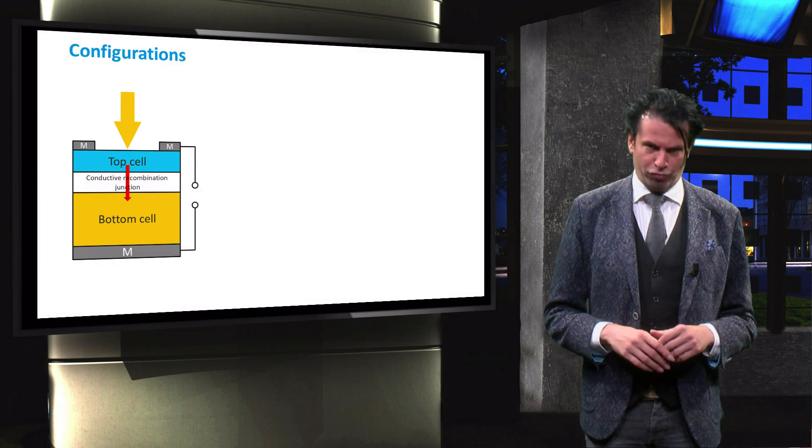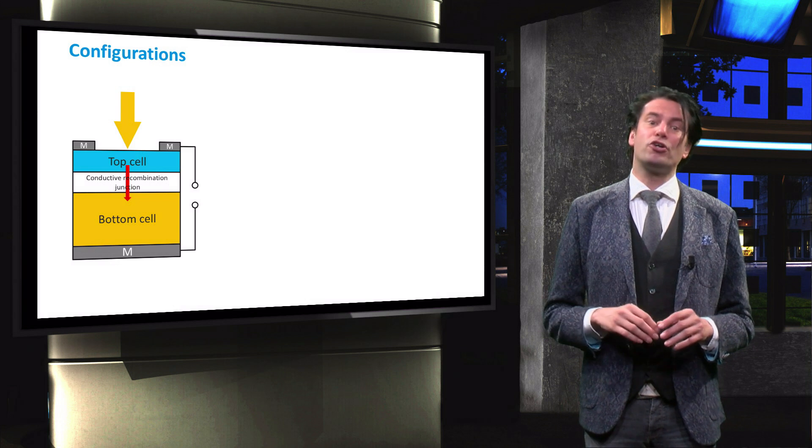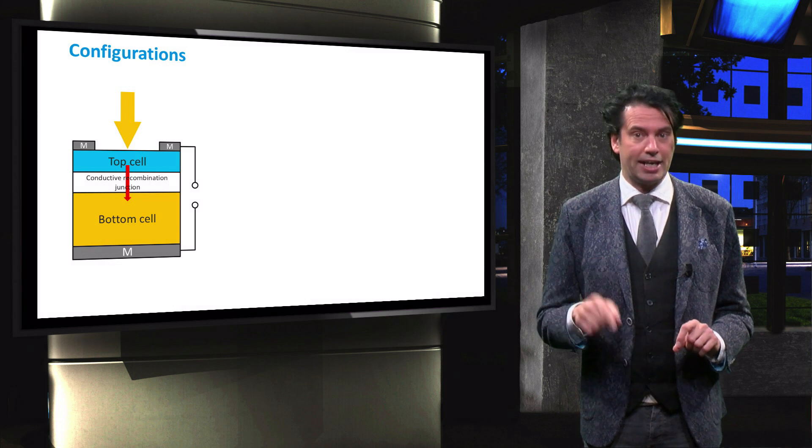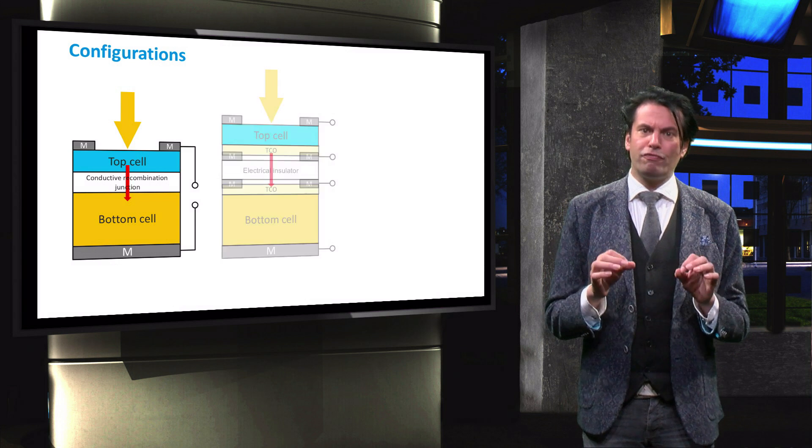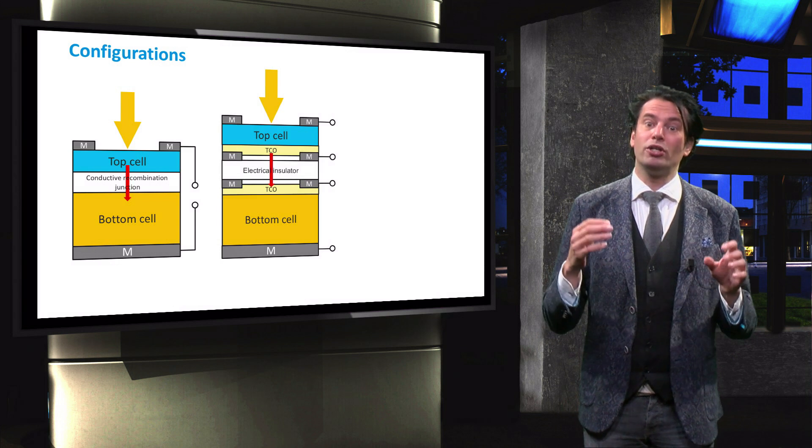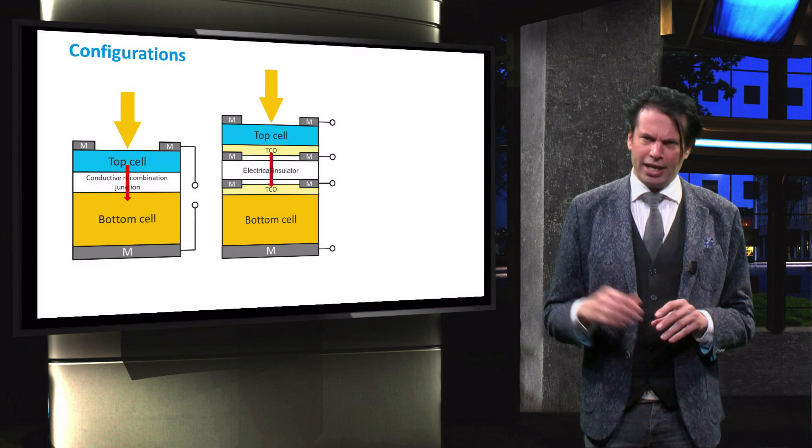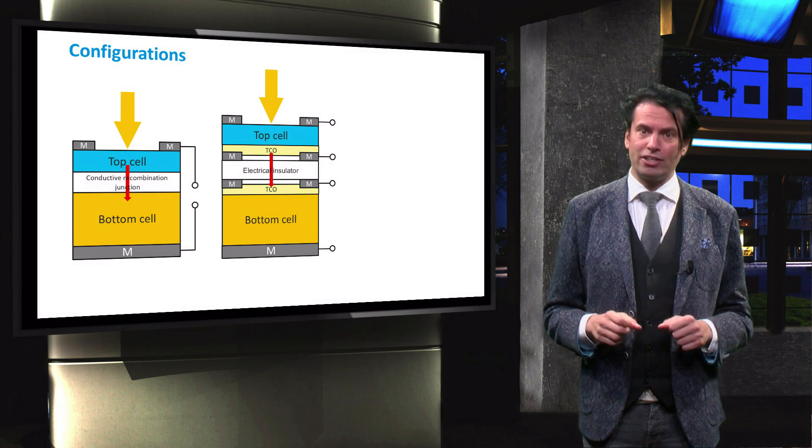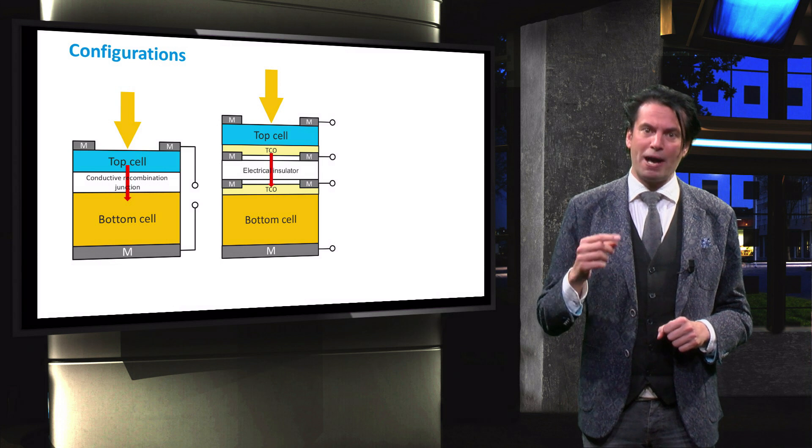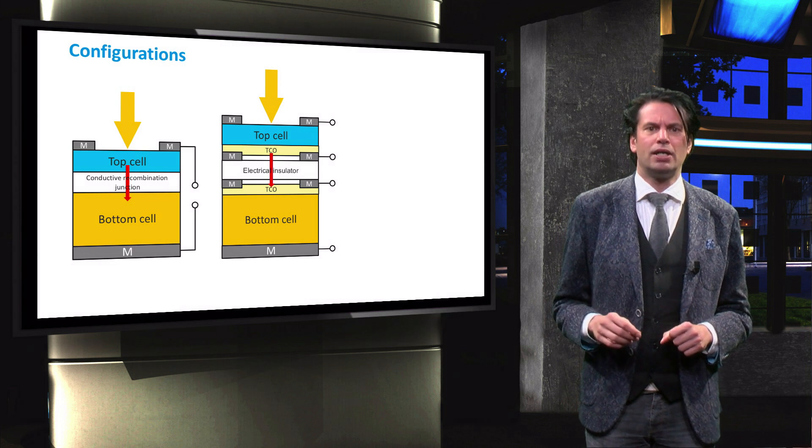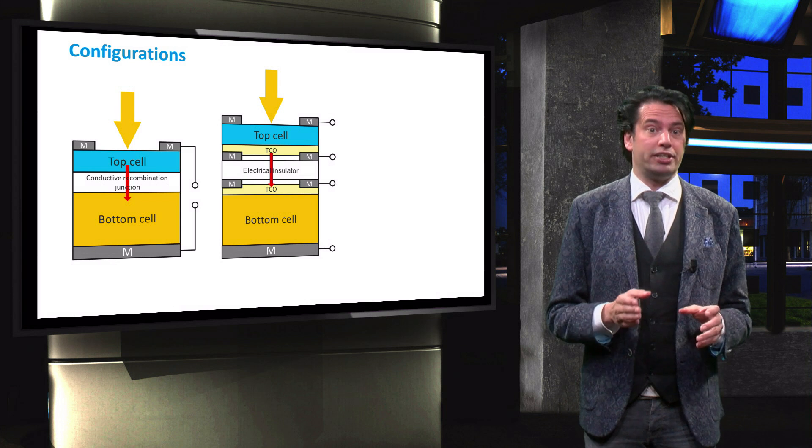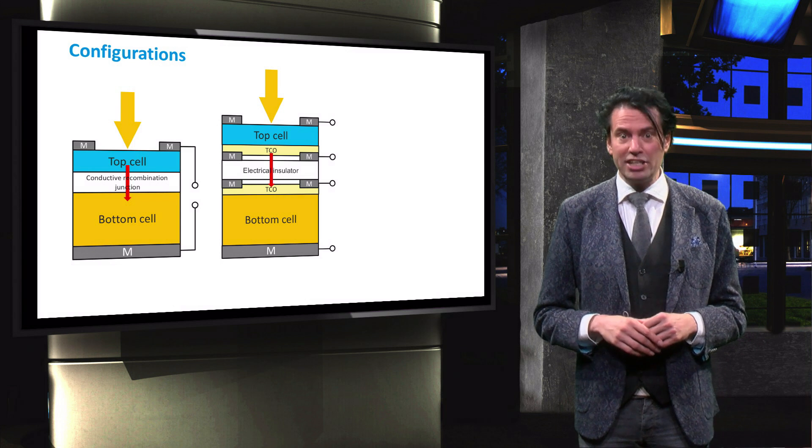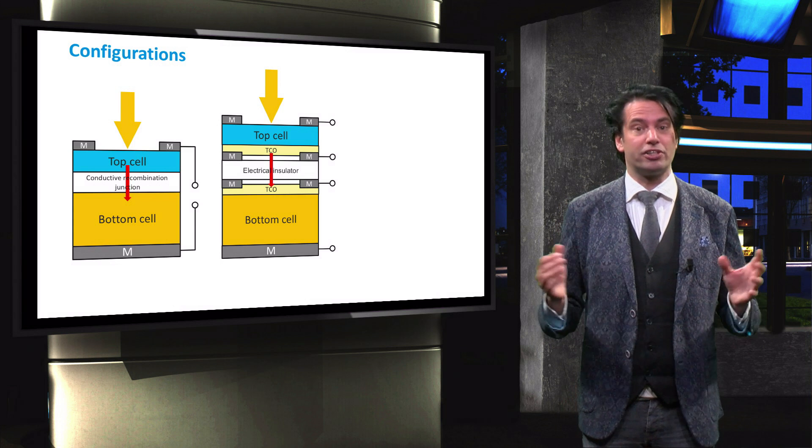Let's start with the various configurations. In this video we see the monolithic integrated two terminal tandem device. This is a four terminal stacked configuration. It can be seen that the four terminal device needs an electrical insulator between the top and bottom cell to operate. This is in contrast with the monolithic two terminal devices, which require conductive tunnel recombination junctions between the different cells.